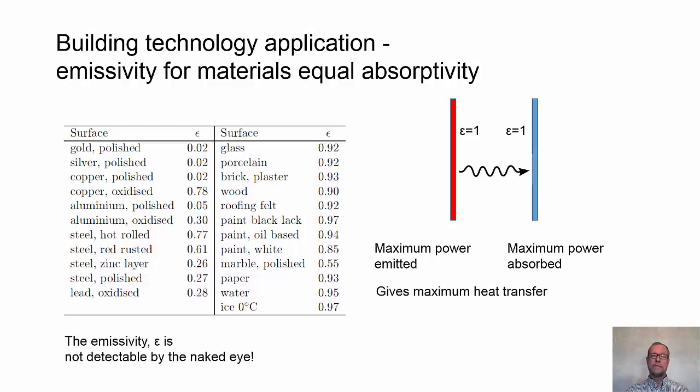Regular building materials, they have emissivity of around 0.9. And it should be mentioned that we can't determine if it's a black or shiny surface, it doesn't say anything about really the emissivity of the material, so we can't detect it with our eyes.